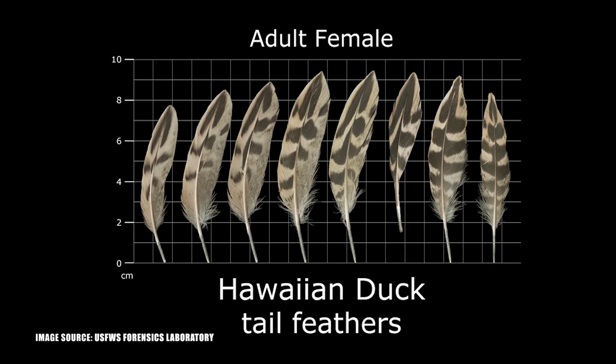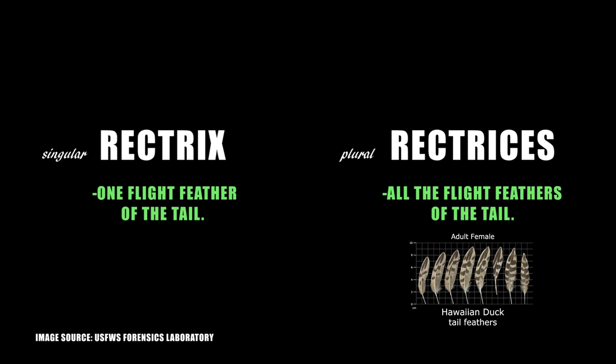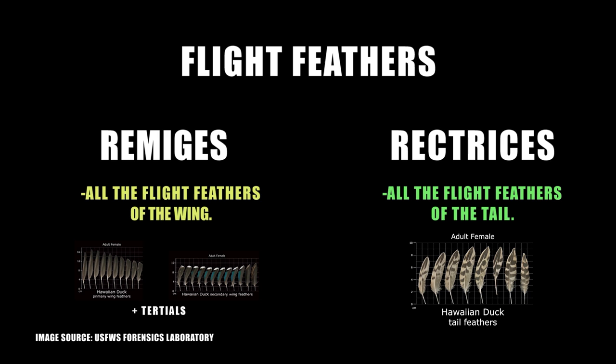Tail feathers are also listed in the database. These flight feathers of the tail are also known as rectrices — sometimes pronounced rectrices. The singular of rectrices is rectrix. The remiges and rectrices are the bird's flight feathers that provide lift and maneuverability, and are what will be easiest to identify in the field.